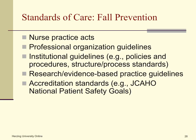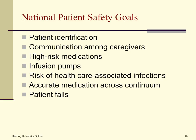Standards of care for fall prevention may come from the Nursing Practice Act, professional organizational guidelines, institutional guidelines such as policies and procedures, evidence-based practice guidelines from research, and accreditation standards such as those from the Joint Commission. National Patient Safety Goals include patient identification, communication among caregivers about incidents, controlling high-risk medications, utilization of infusion pumps, reducing the risk of healthcare-associated infections, use of accurate medication reconciliation across the continuum of care, and preventing patient falls.